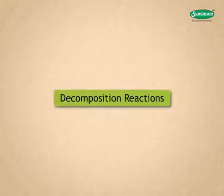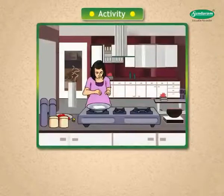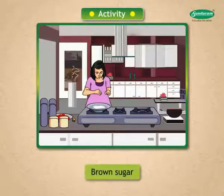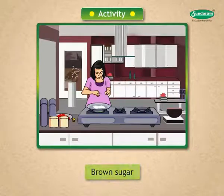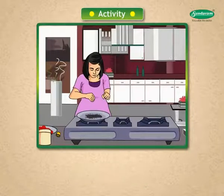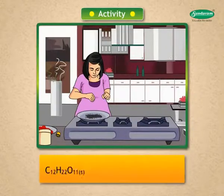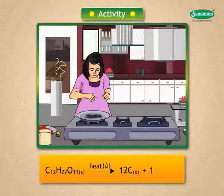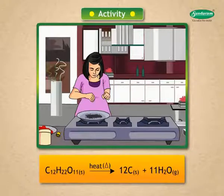Now let us move to the decomposition reaction. Look at this situation: Mary was helping her mother to make brown sugar for pudding. After some time, she obtained a black mass instead of brown, with a burning smell. What do you think happened? Sugar on heating formed carbon and water. In the above activity, a single reactant — sugar — has broken down to give simple products: C and H₂O.